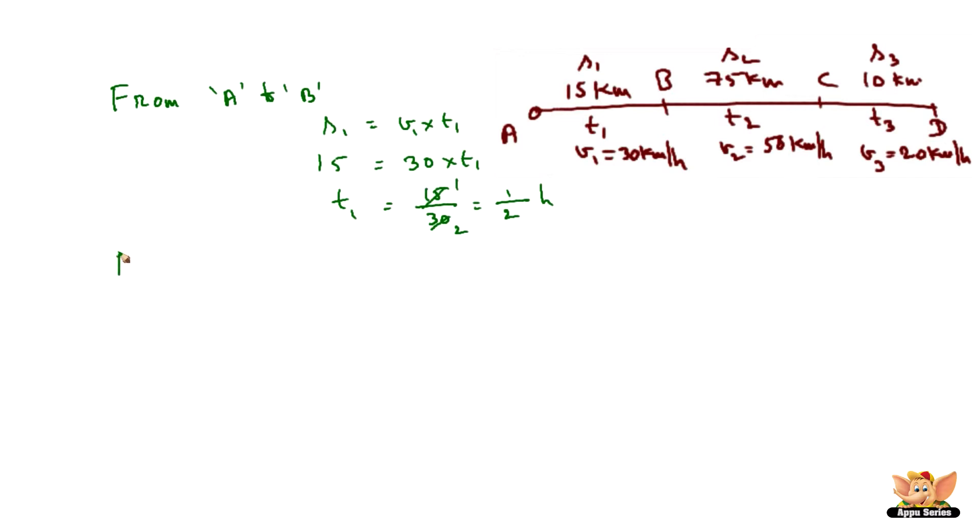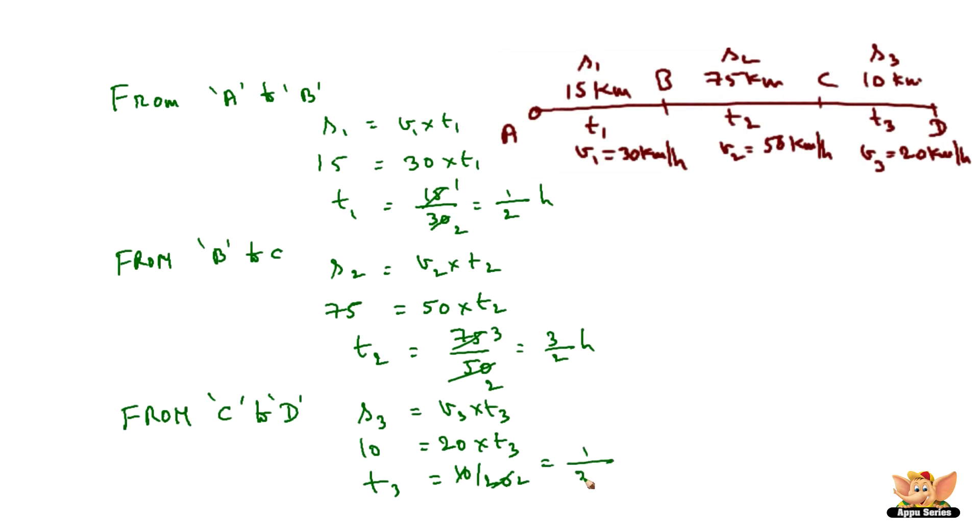Which is 1 by 2 hours. Now from point C to D, we have S3 equals V3 into T3. S3 is 10 km, V3 is 20, hence T3 becomes 10 by 20, 1 by 2 hours.